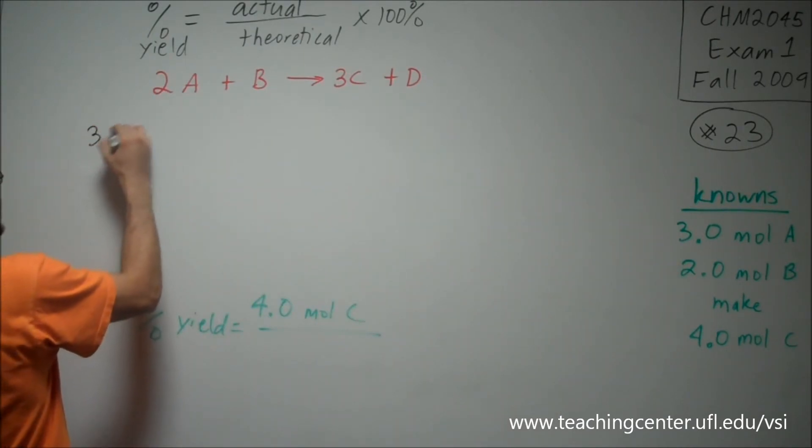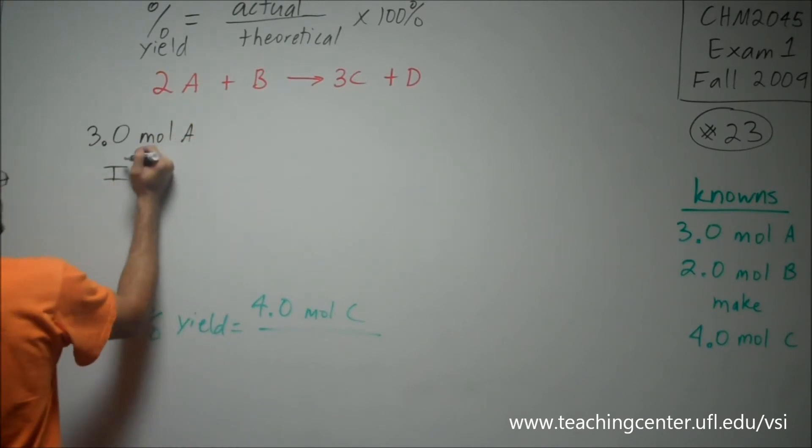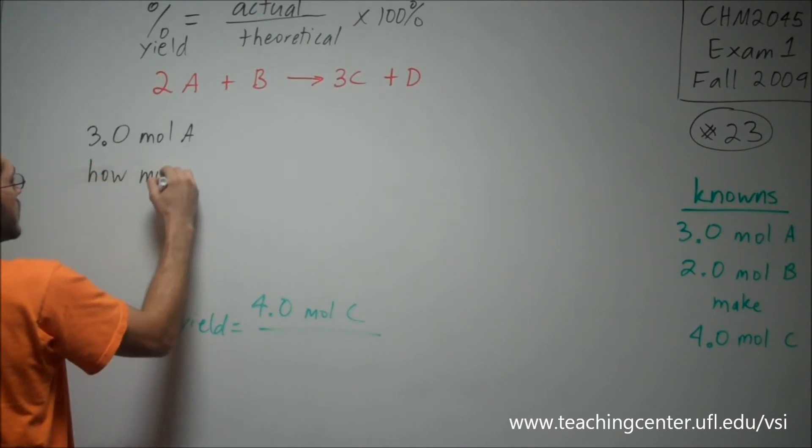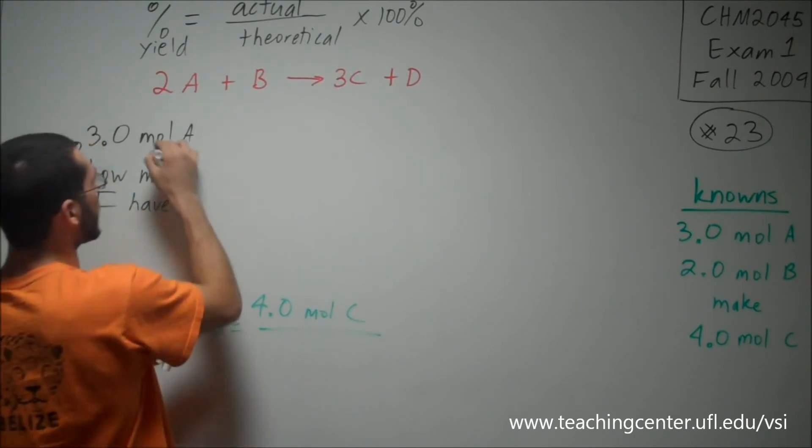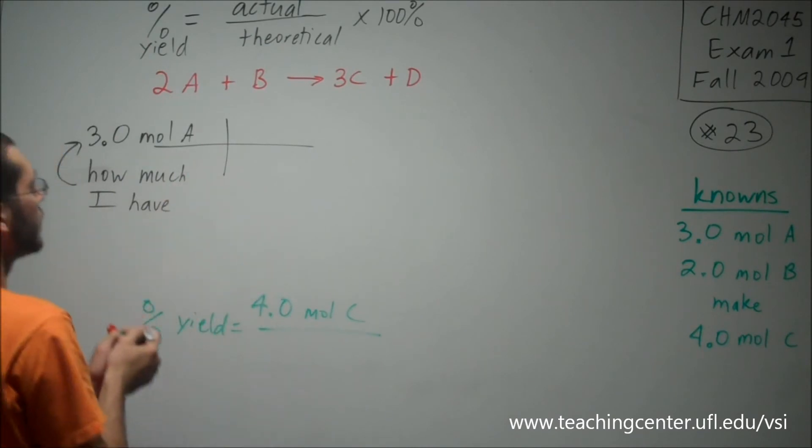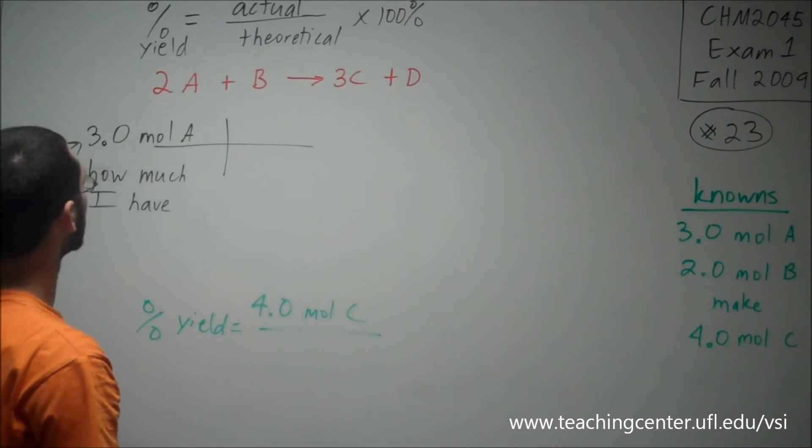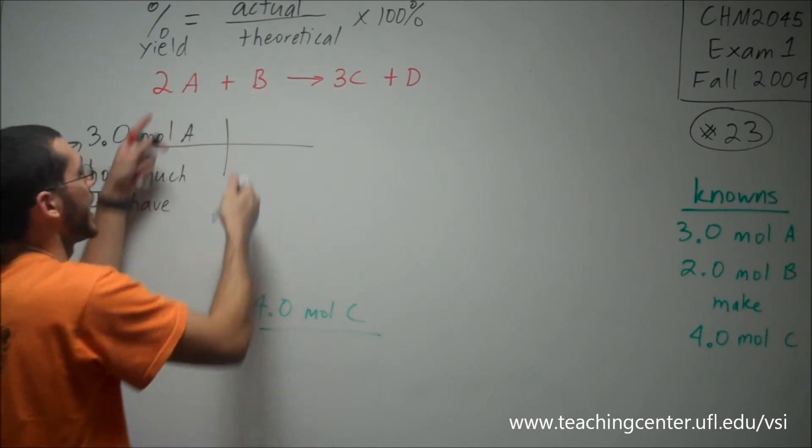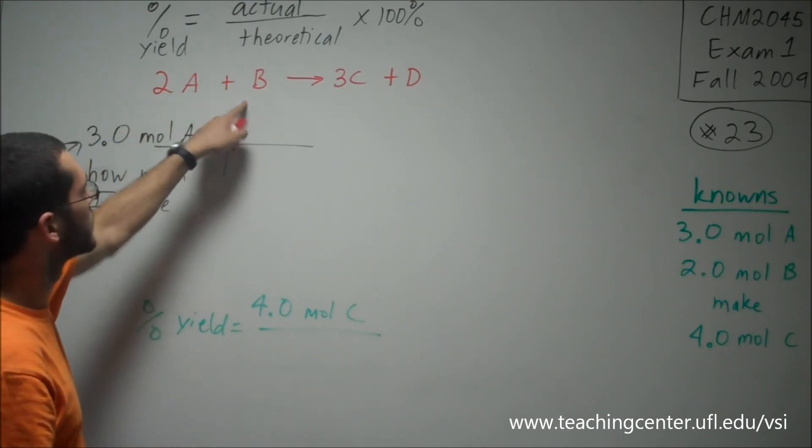So I have currently 3.0 moles of A. So this is how much B do I need in order to use all this A? Well, since they appear in a 2 to 1 ratio, say I had 2 moles of A, I would theoretically need just 1 mole of B to use it up.